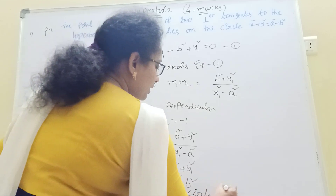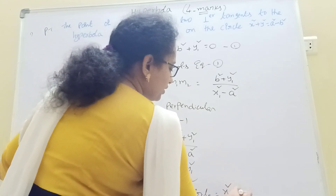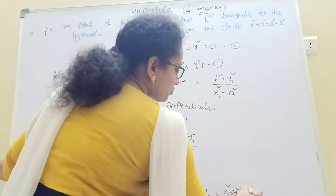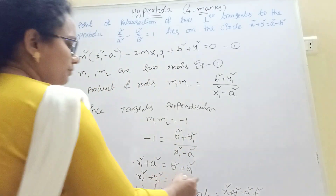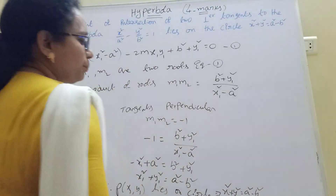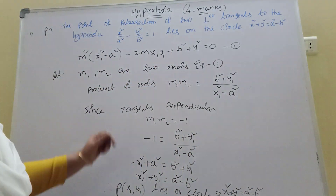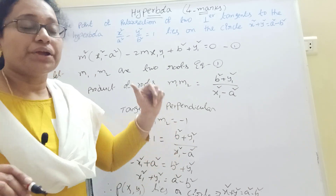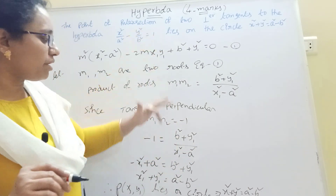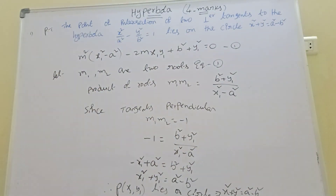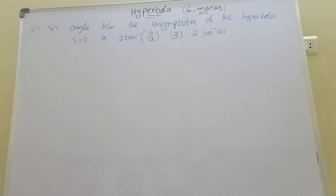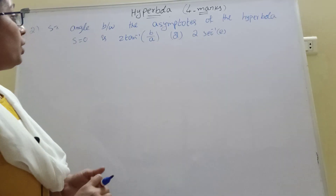Therefore the point P(x₁, y₁) lies on the circle x² plus y² equal to a² minus b². This is a very important model. This is also very important — questions and answers are very important.